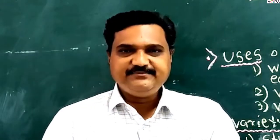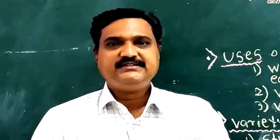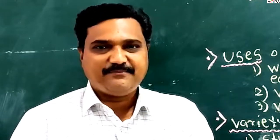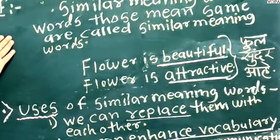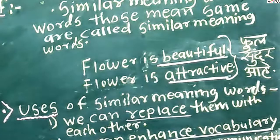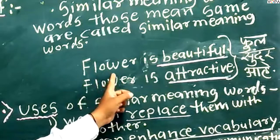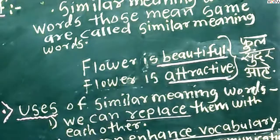Today we are learning similar meaning words. Similar meaning words means words that both mean the same. Look, I have a little definition here. Look at this example also. Flower is beautiful. Flower is attractive.